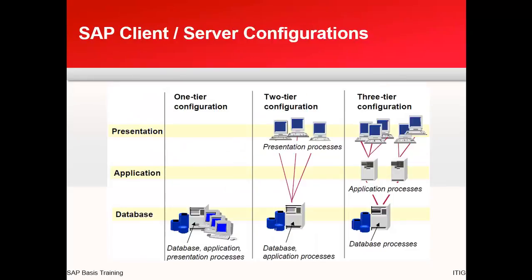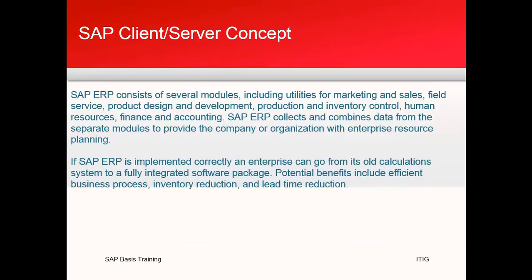Now let's look at client-server configurations. There are three different configurations. On the left side is the one-tier configuration, in the middle is the two-tier configuration, and on the right is the three-tier configuration. In the one-tier configuration there is no separate presentation layer and no separate application layer — everything including database, applications and presentation processes is in one layer. In the two-tier configuration you have presentation processes and at the bottom both database and application processes. In the three-tier configuration, the presentation layer, application process and database process are all separate.